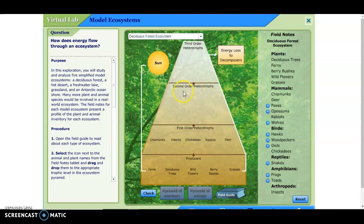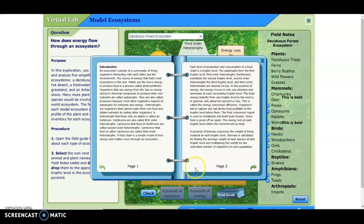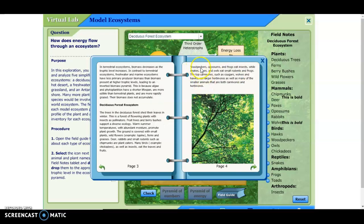Okay, now on to the second order heterotrophs, or what we call the secondary consumers. And so we can go in here. Let's see. Here we go. Woodpeckers, possums, and frogs eat insects, while snakes, foxes, and owls eat small rodents and frogs. All right, so we're going to have woodpeckers, possums, frogs, snakes, foxes, and owls.